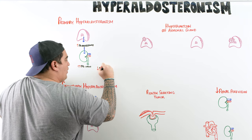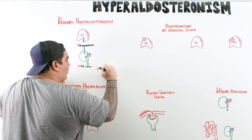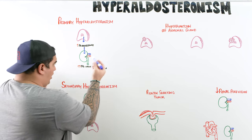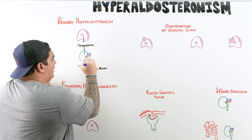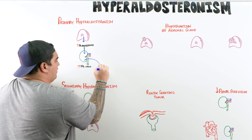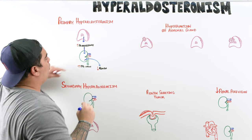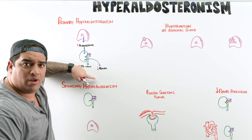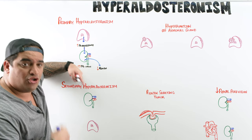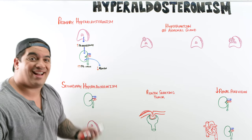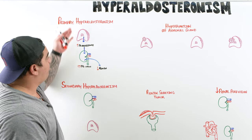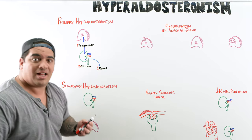If renin is reduced, subsequently, I'll lead to less angiotensin I, less angiotensin II, and less aldosterone. That's the concept of primary hyperaldosteronism.